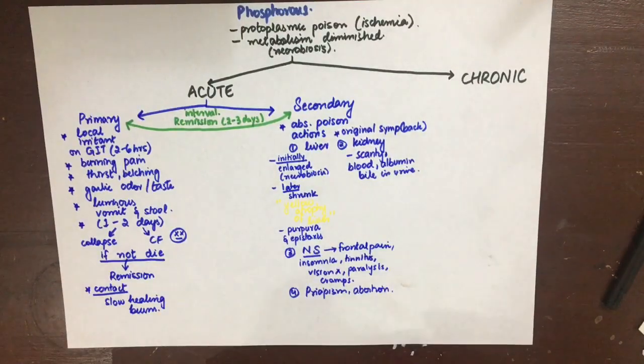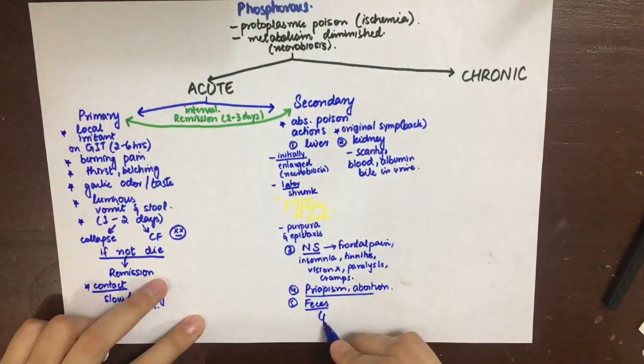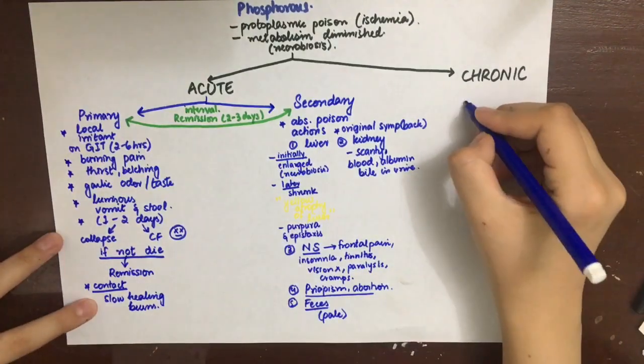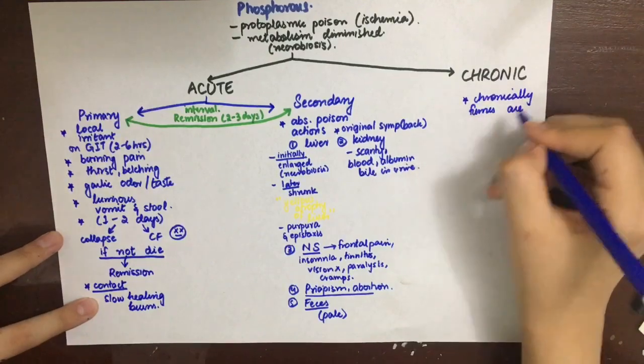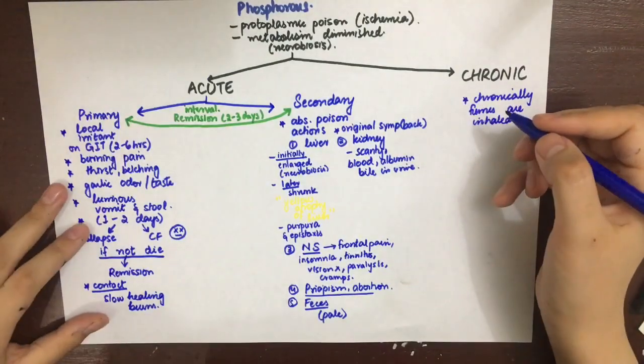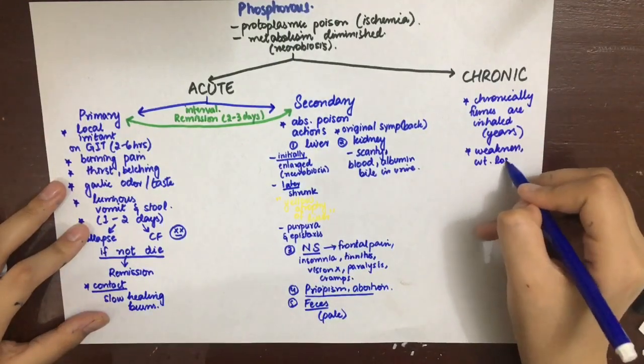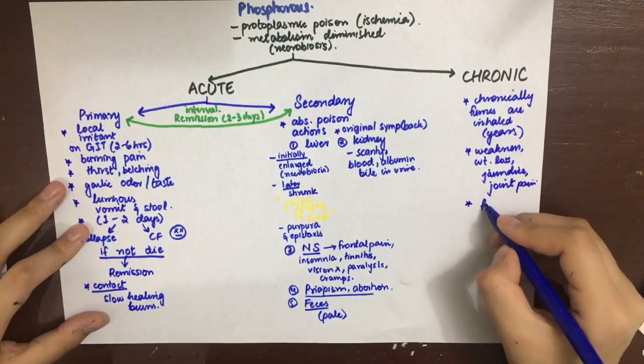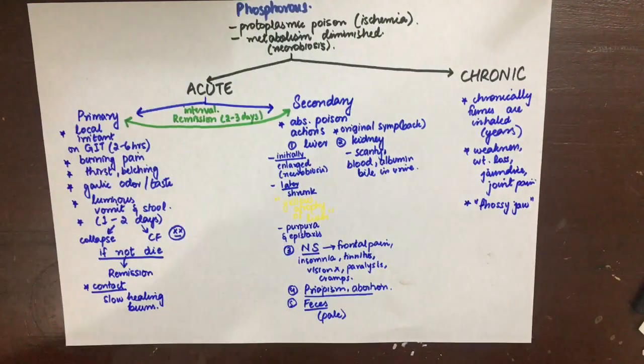Chronic poisoning occurs when fumes are inhaled over years. It results in weakness, weight loss, jaundice, and joint pain. There is a special condition called phossy jaw, which is basically osteomyelitis of the bone with multiple sinuses discharging foul-smelling pus.